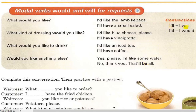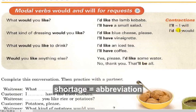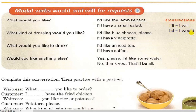Contractions: 'I'll' is a contraction — a shortened form, or abbreviation. I'll equals I will. I'd equals I would. These are contractions, also called shortenings or abbreviations.